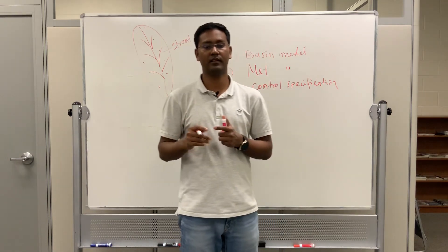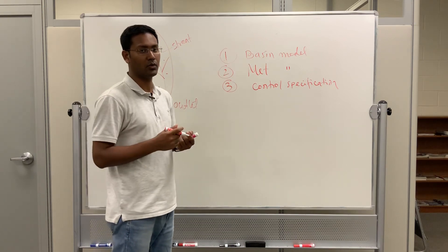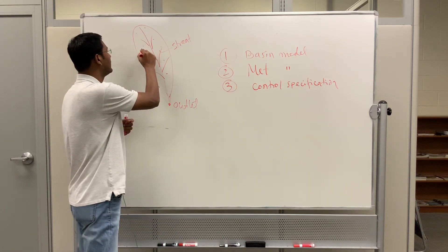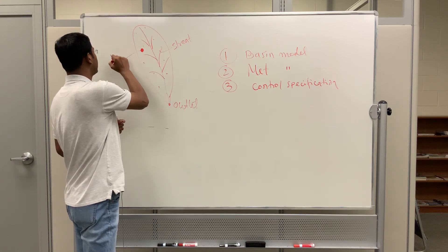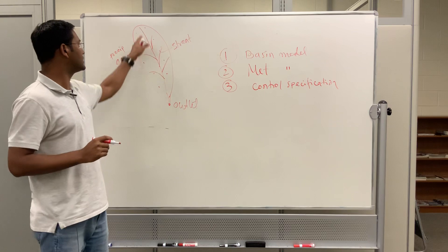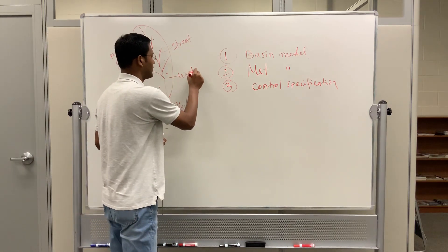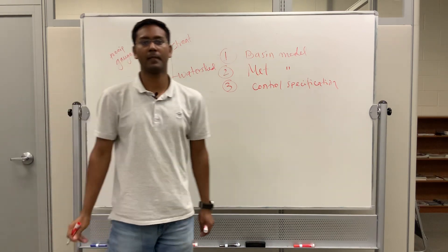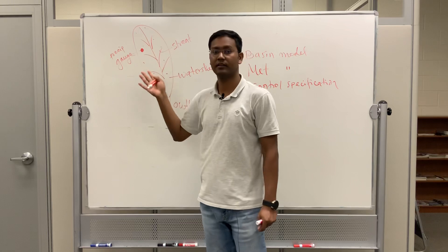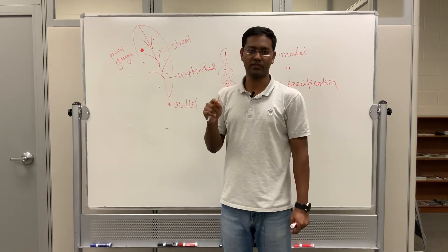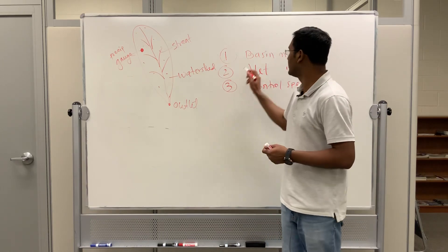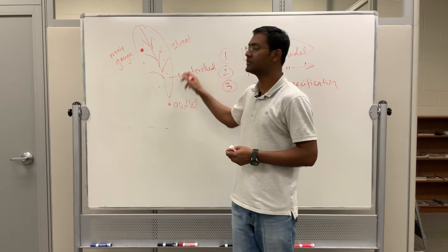You can set up the model as a lumped model or as a gridded model. If it is a lumped model, then you need one precipitation gauge here or at any other location within the watershed. The model will be a lumped model — you have an outlet and you are just providing the forcing. This is called forcing, and it is part of the meteorological model.